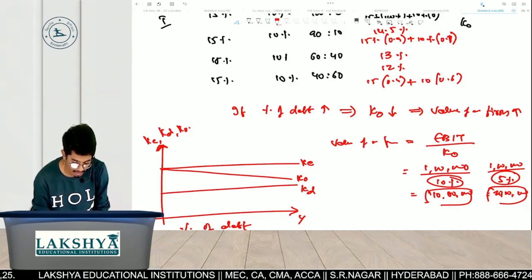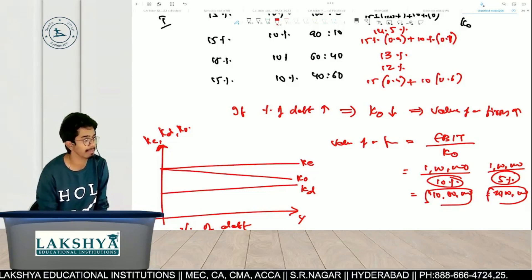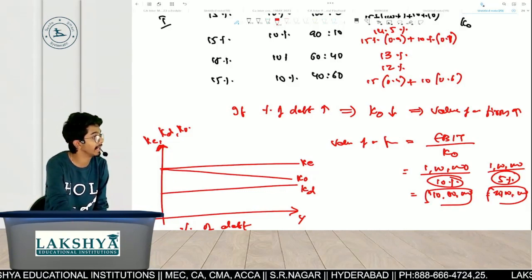Looking at the graph, K-O is shown sloping downward, and at the final point it gives 10%.